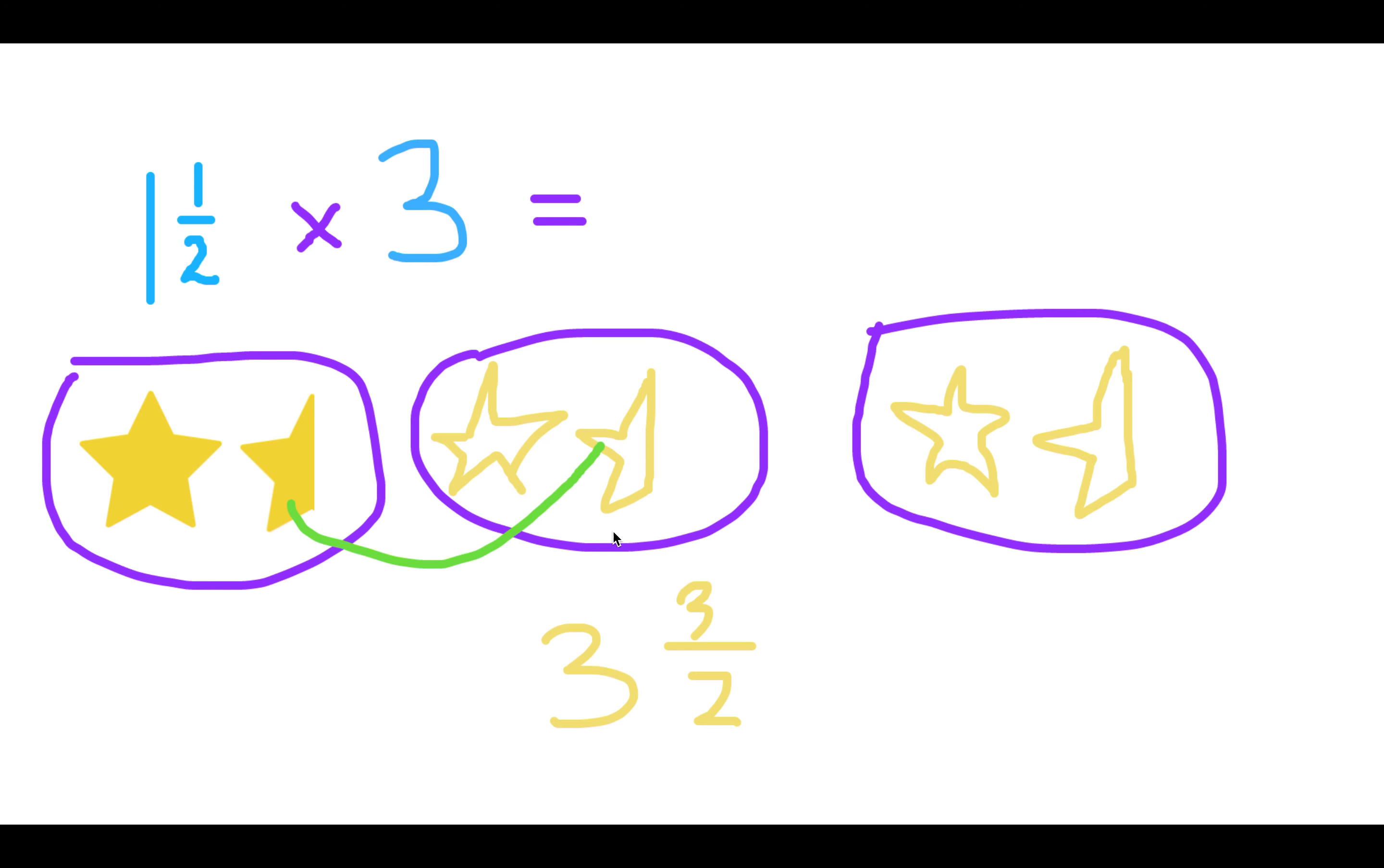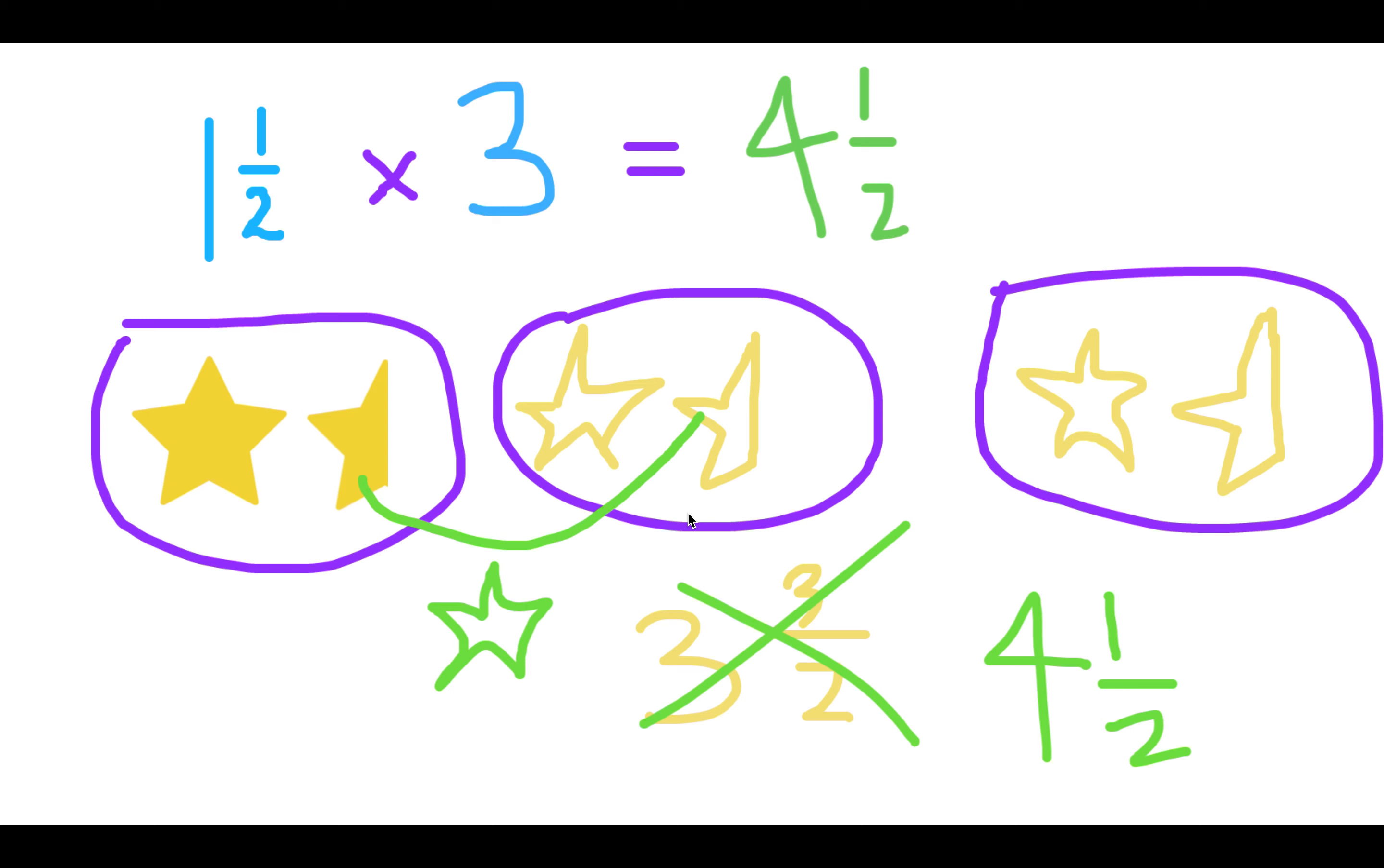But again, I can put these two halves together and make a whole star. So I'm going to make a new star and now I have four whole stars plus a half star. So my answer is four and one half.